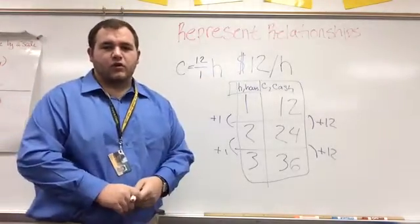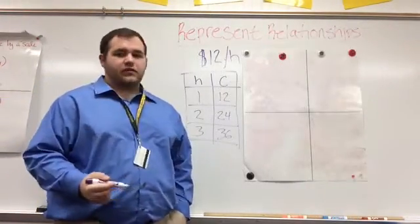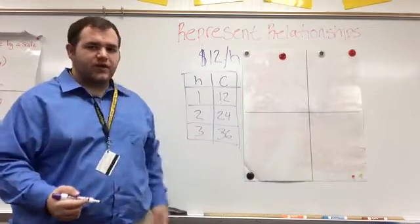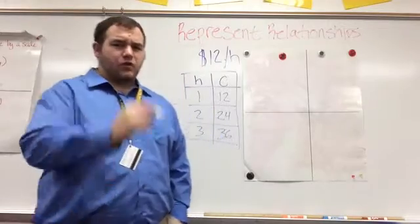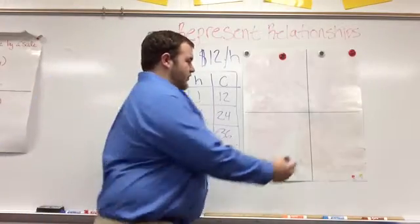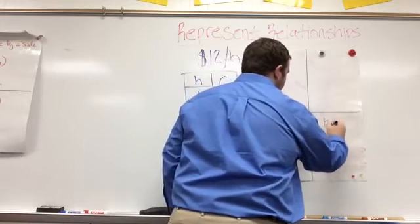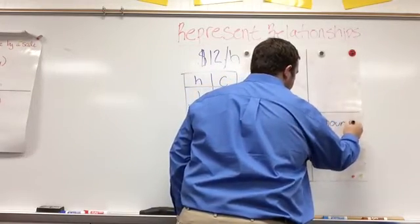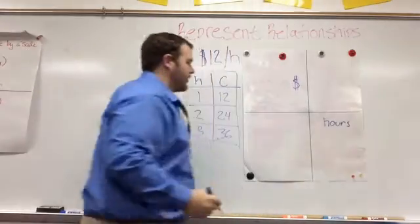That's our first two ways of representing the same thing. The third way to represent the same data that we've done in the table and the equation is through a graph. The first thing we want to do is label our graph so we know what we're putting in. On the X axis, that's going to be the number of hours worked, so hours. And then our Y axis will be cash. I'll just put a dollar sign up there.